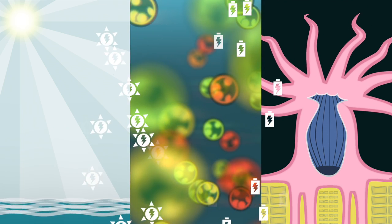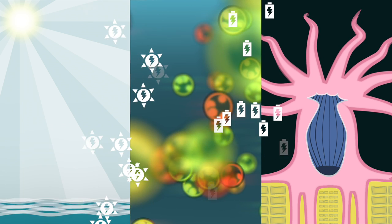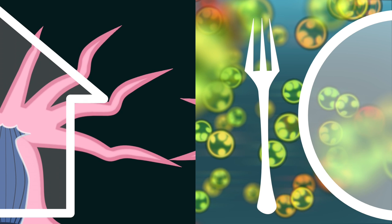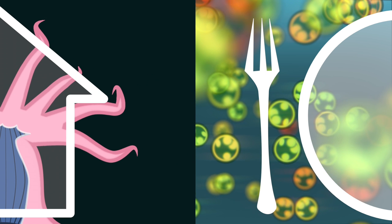The zoanthalae use photosynthesis to convert sunlight into energy, most of which gets passed on to the coral polyps. So the coral polyps provide shelter and the zoanthalae provide food for the polyps. It's a win-win relationship.